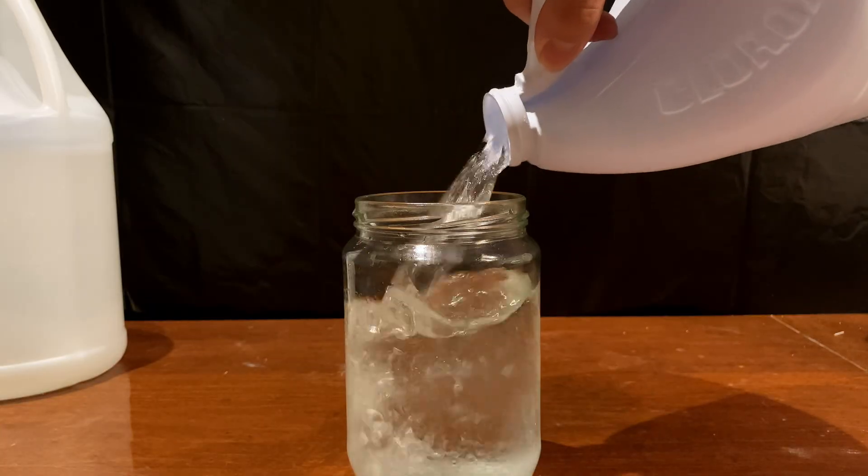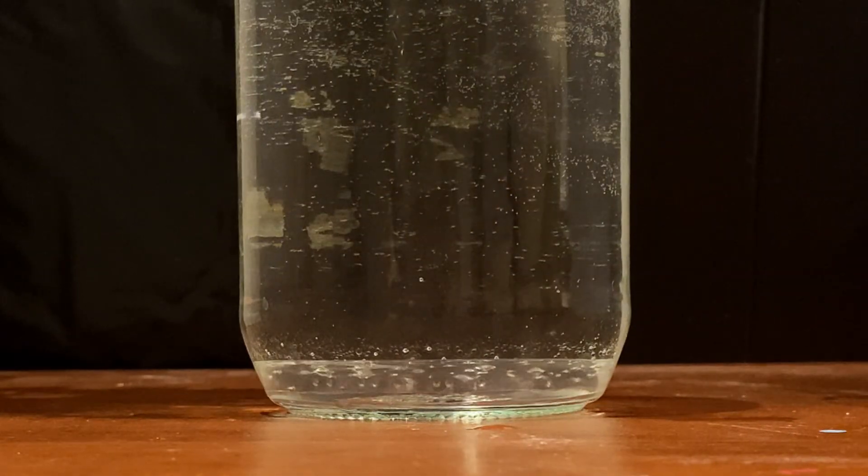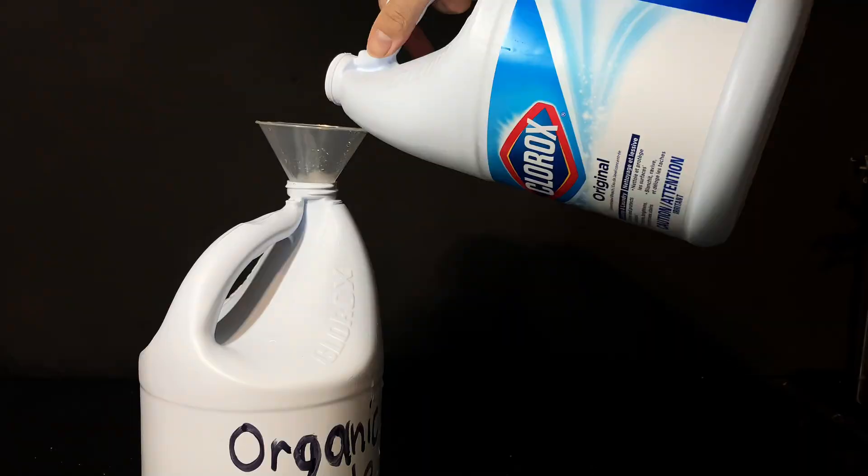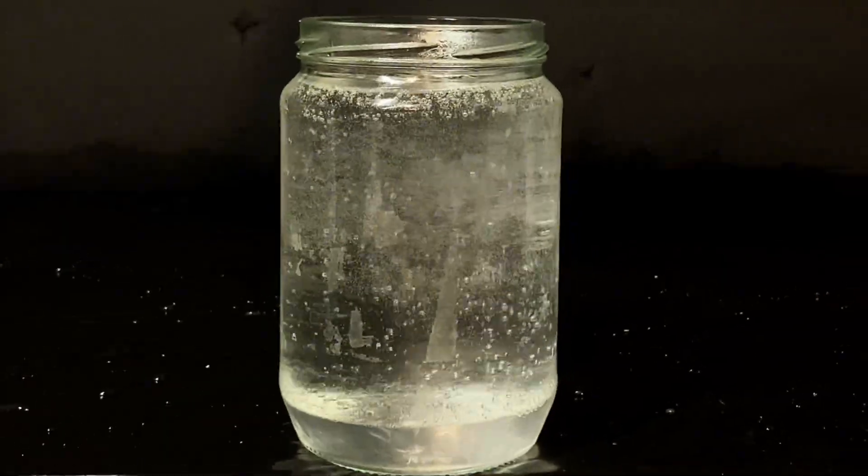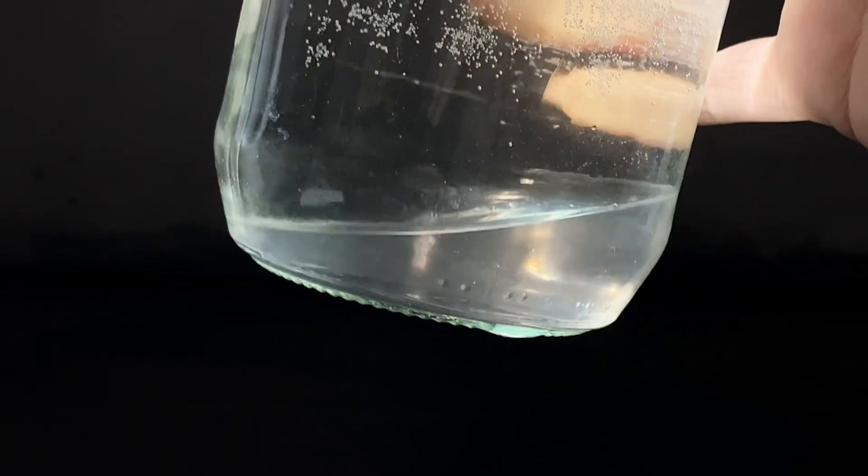As you can see, the chloroform from this batch sinks to the bottom of the jar, and it looks pretty cool. Give it some time to settle as some drops may still be stuck at the top. The second batch kind of went the same way. After pouring off all of the side products and water on the top, I poured the chloroform into the same jar, and you can see how I got a good amount of it in the end.